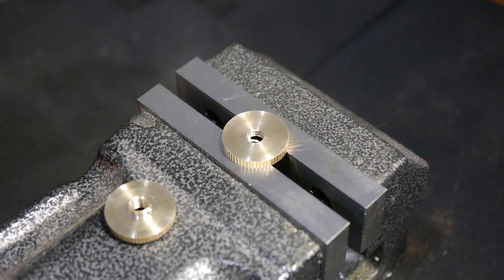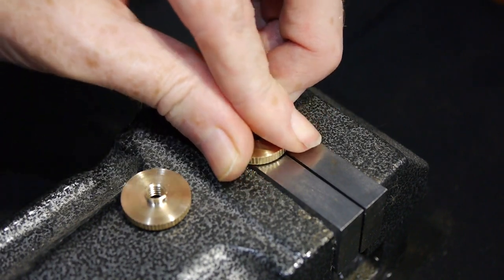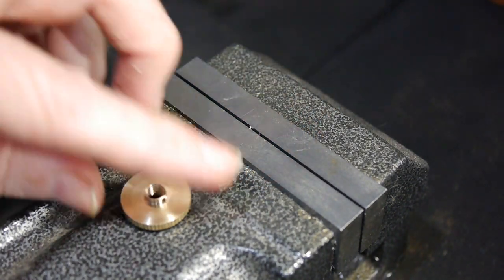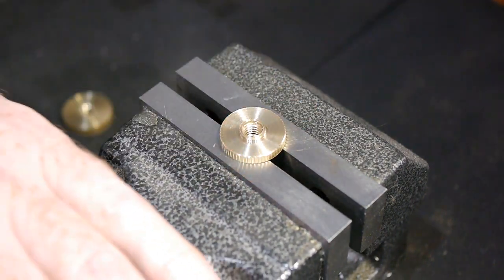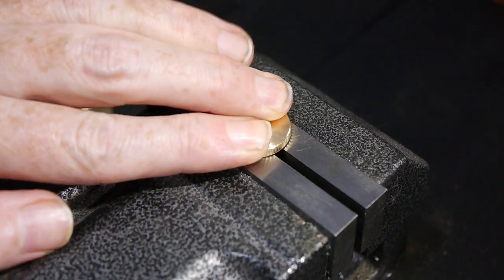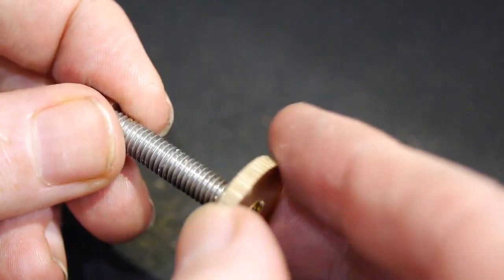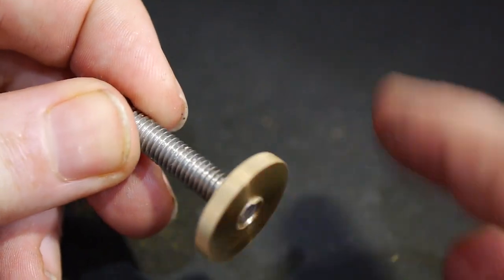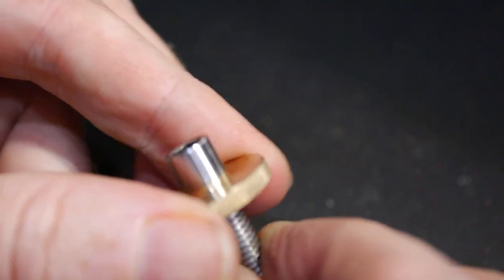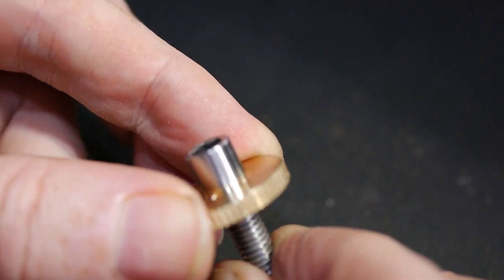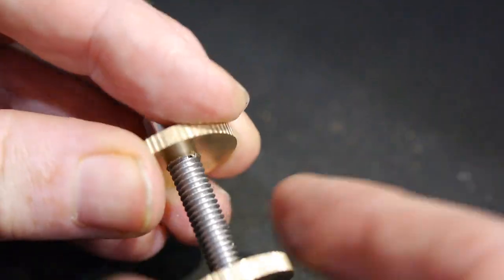An easy way to remove the large burr left by parting is to place it between vise jaws and pinch it off. The clean corners of the vise jaws remove the burr pretty easily. The top adjustment wheel fit perfectly against the cap, and off camera I used Loctite 638 to make sure it stayed there. The locking wheel was also a good fit.